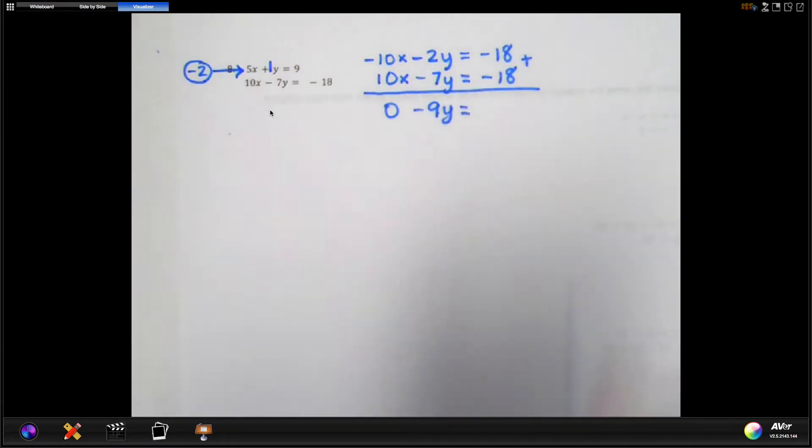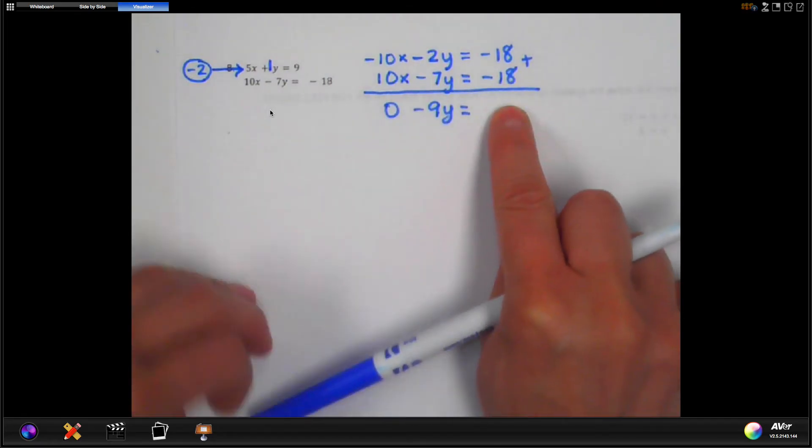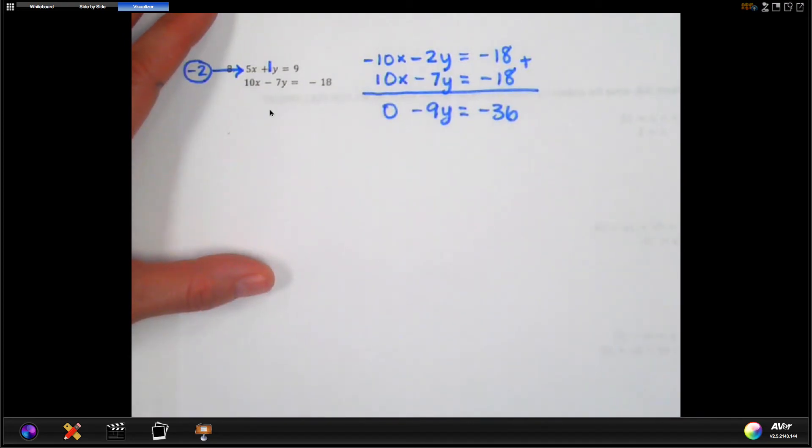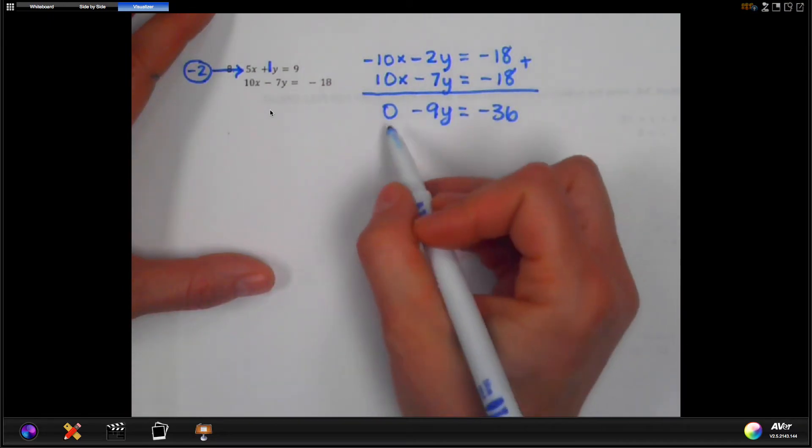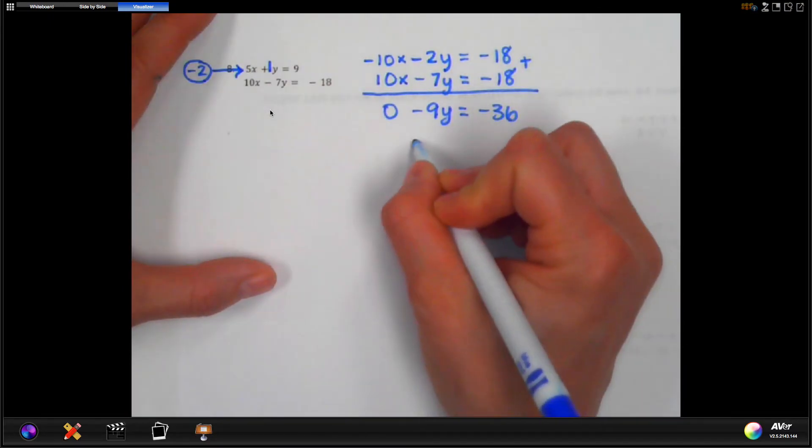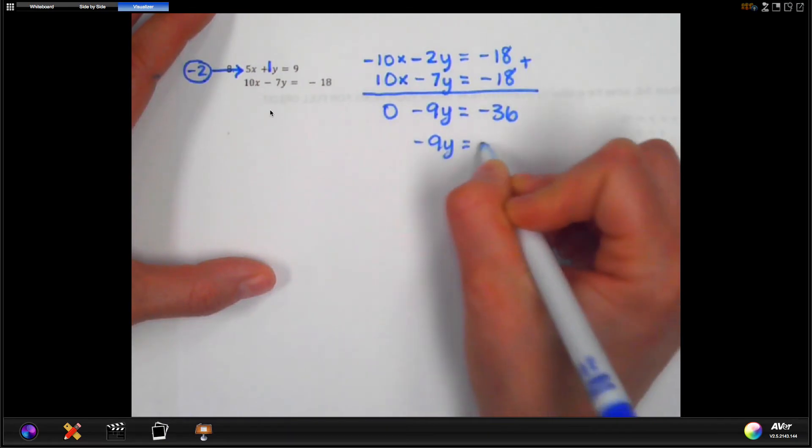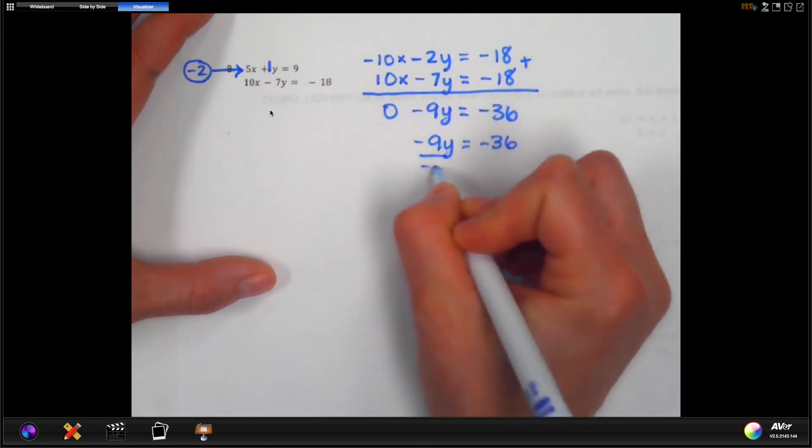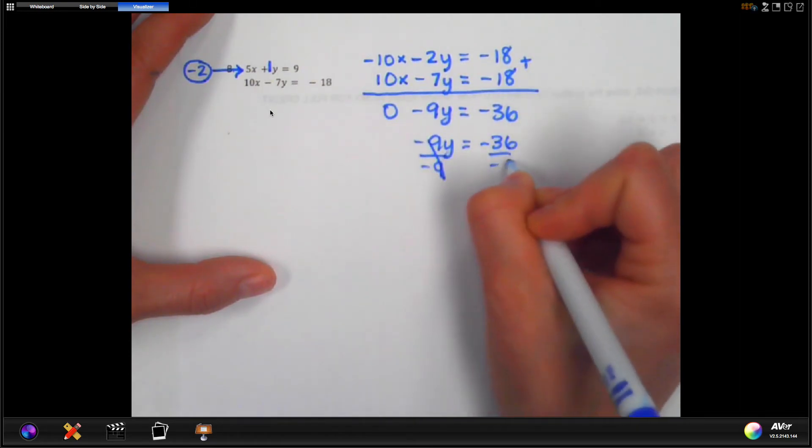And now negative 18, be careful, plus negative 18 is not going to give me 0. It's going to give me negative 36. Okay? And so check that in your calculator if you're unsure. All right, drop that 0. So negative 9y equals negative 36. Now we're going to do our last step here and divide by negative 9. Divide by negative 9.